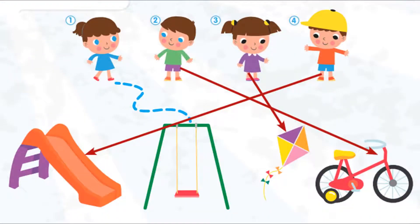1. I have a swing. 2. I have a bike. 3. I have a kite. 4. I have a slide.